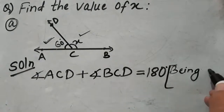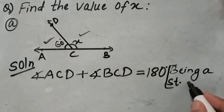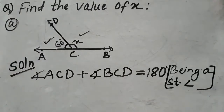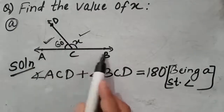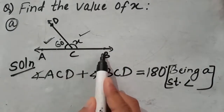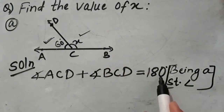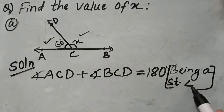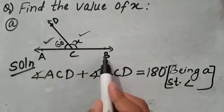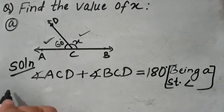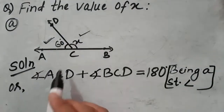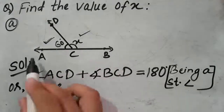It being a straight angle. So angle ACD plus angle BCD is equal to 180 degrees, being a straight angle. Now students, as we can see the value of angle ACD in the figure is given as 60 degrees, so we have to replace ACD by its value.